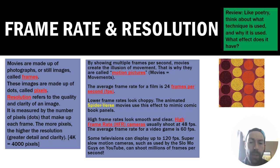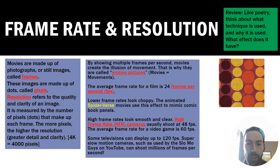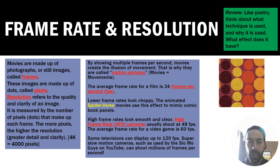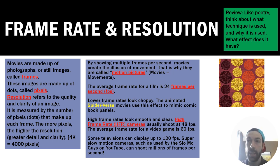Frame rate: by showing multiple frames per second, movies create the illusion of movement — that's why they're called motion pictures. The average frame rate for a film is 24 frames per second (FPS). Every single second, you're actually seeing 24 pictures shown very quickly — faster than our eyes can detect. We cannot tell that there are a bunch of still images because there are too many packed into too short a time. So 24 frames per second looks to us like natural movement.